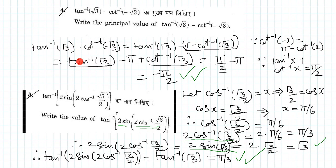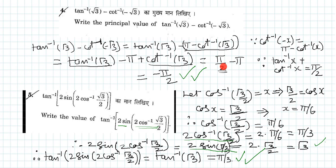Let us simplify: tan inverse of root 3 minus pi plus cot inverse of plus root 3. We know that tan inverse of x plus cot inverse of x is nothing but pi by 2 radian. Therefore, tan inverse of root 3 plus cot inverse of root 3 is equal to pi by 2.